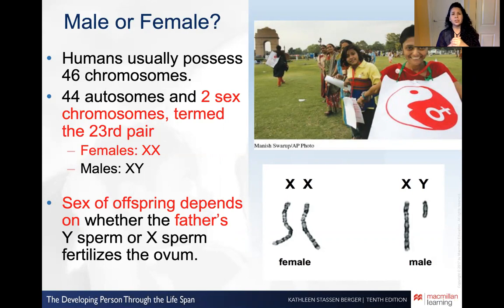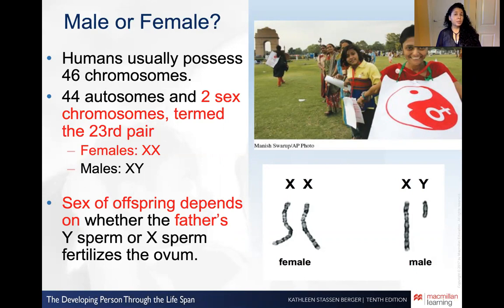Whether that 23rd pair is X or Y is determined by the father's sperm. It is the male contributor to this zygote that determines the sex of the offspring — it has nothing to do with the female's ovum. This is contrary to what was believed in the old days, when women were thought of in a derogatory manner if they did not produce sons. It is actually the male who contributes the Y chromosome to produce a male child.